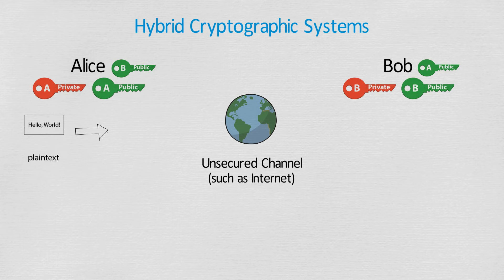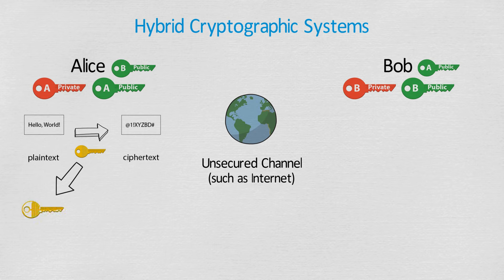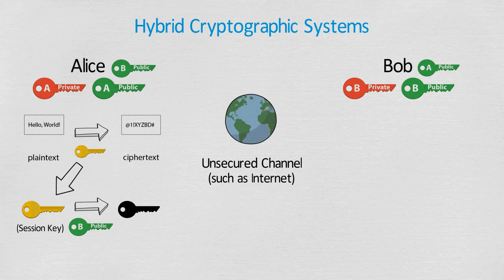To send a message, Alice uses a symmetric key to encrypt the message into ciphertext. In this case, the symmetric key is called a session key. She then uses Bob's public key to encrypt the session key and sends it to Bob — this is done once at the beginning of every session.